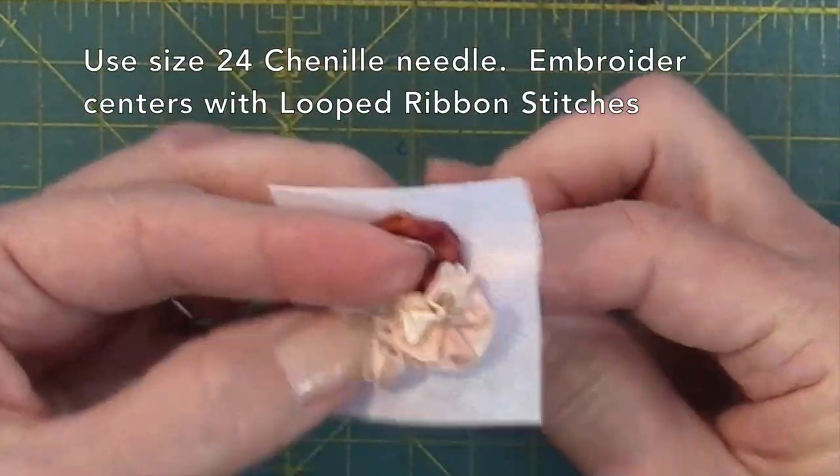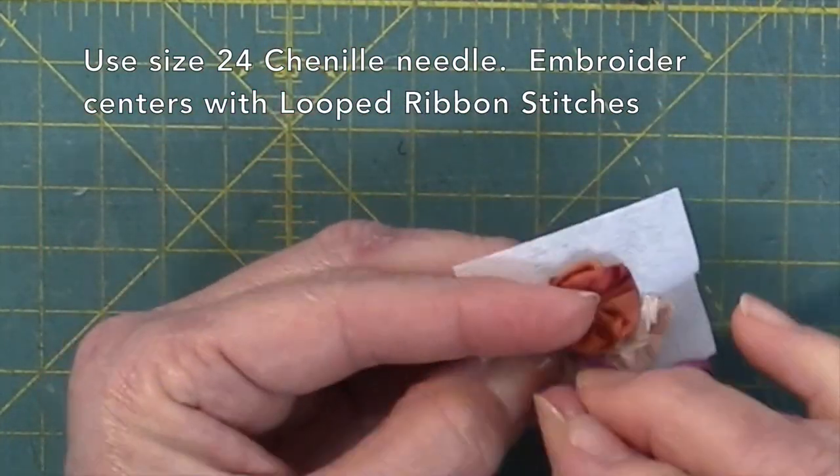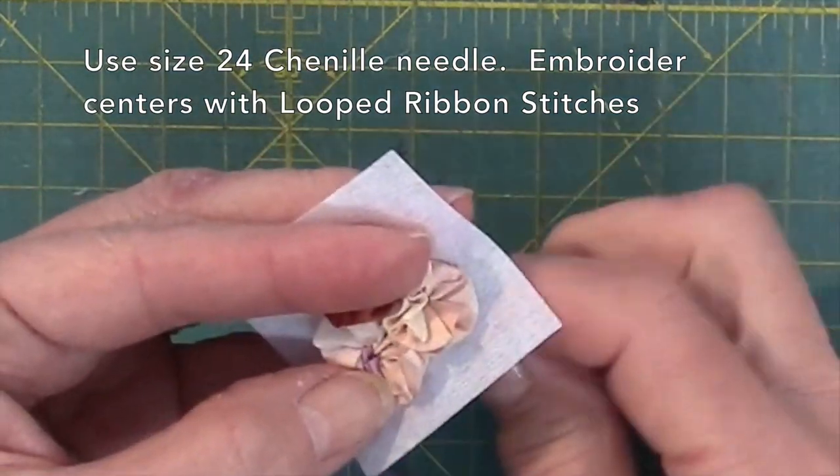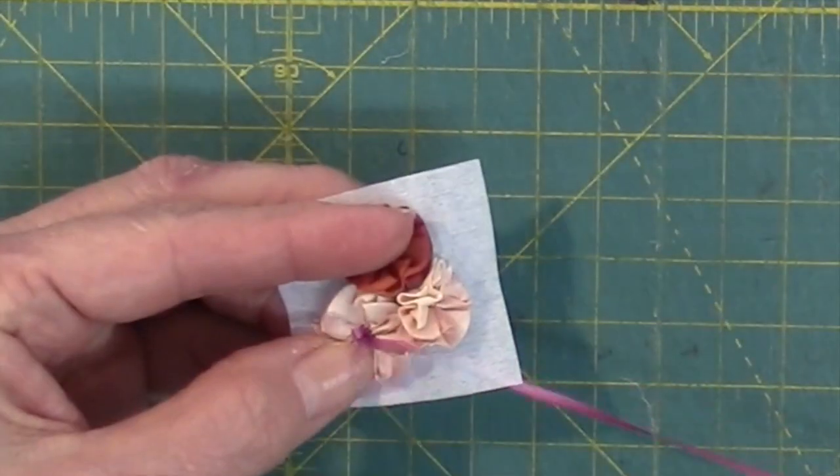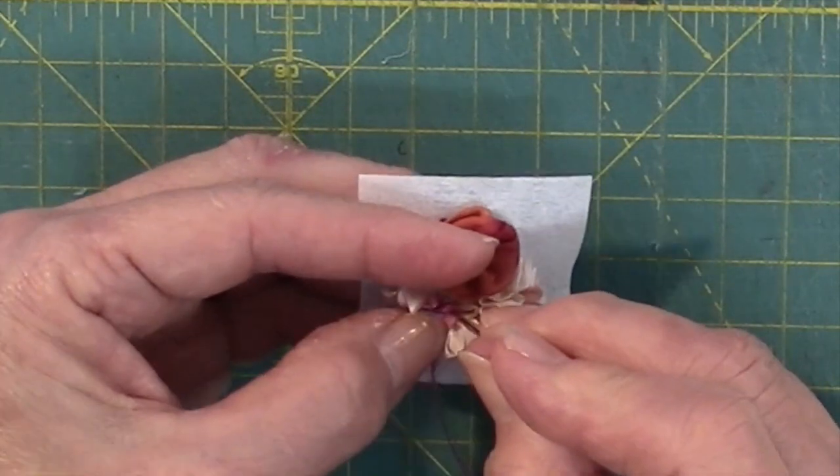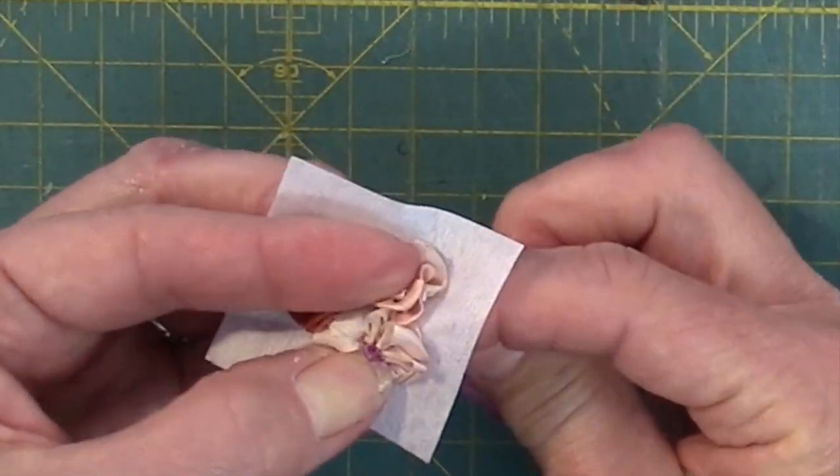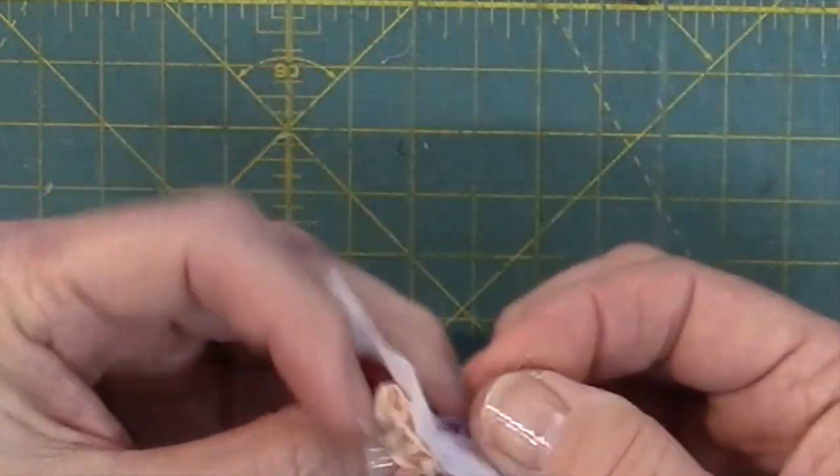Add accents to the cherry blossom centers using two millimeter ribbon and the looped ribbon stitch. To make the looped ribbon stitch, bring your ribbon up to the center of one flower, make an eight inch deep loop with the ribbon, pierce the loop as for a ribbon stitch, and then stitch straight down. Before completing the stitch, leave that second loop on the top.